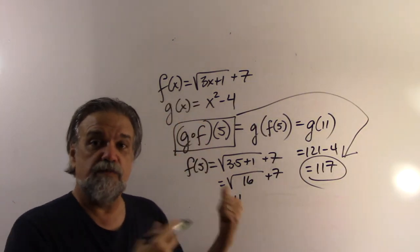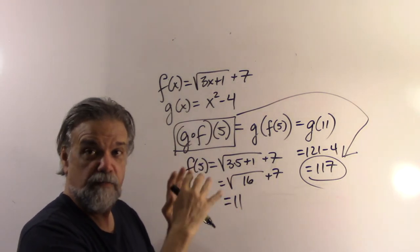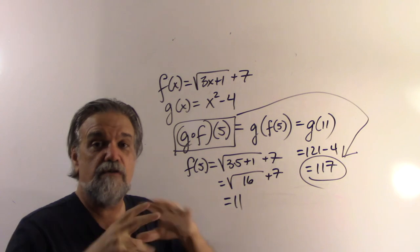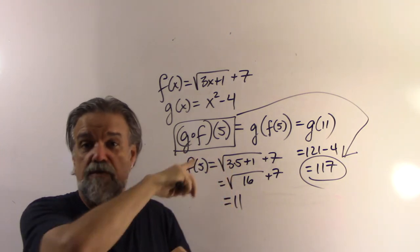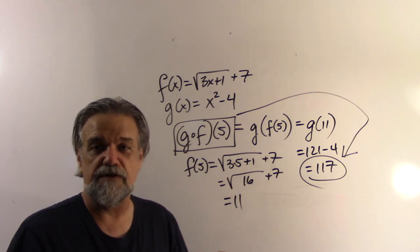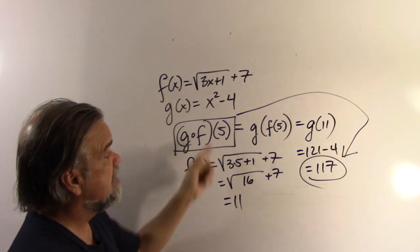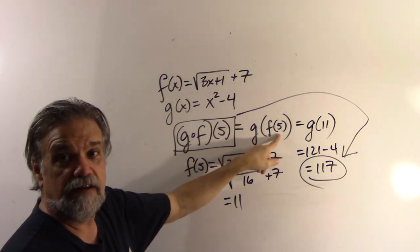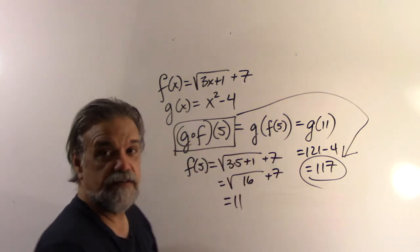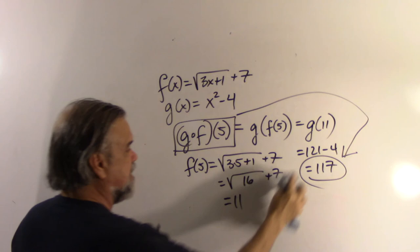So, what did we do differently this time? When we're just evaluating for a particular value, you don't have to do what we did before where you replace x with g(x) and you come up with a particular function or equation. You don't have to do it that way. What you do is you start on the inside and you figure out what that is and then you move to the outside. Let's look at something else now.